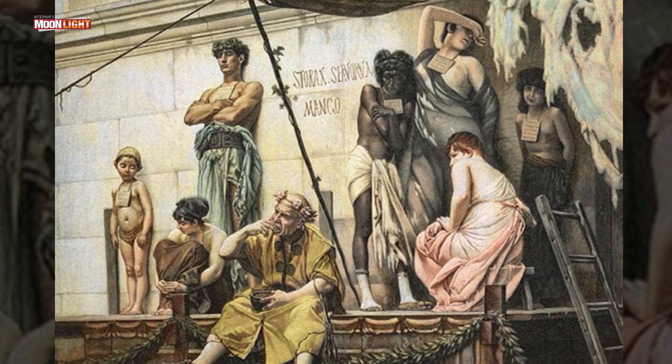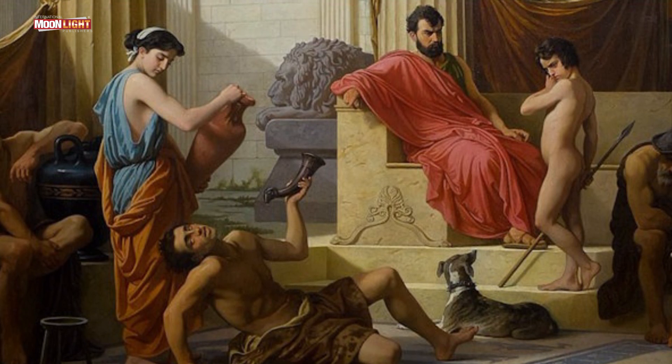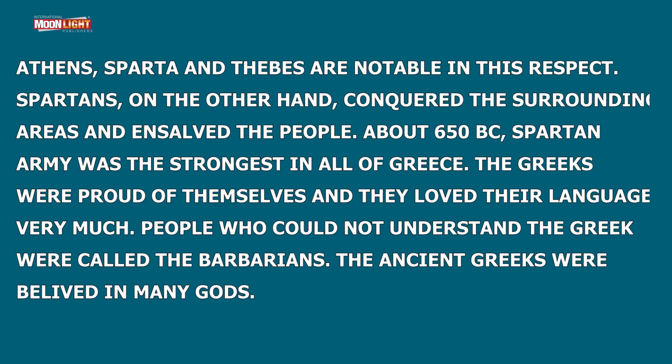There were many slaves in Greek society — about one third of the ancient Greeks were slaves. The Spartans treated their slaves very harshly, while the Athenians treated them somewhat better. Spartans conquered surrounding areas and enslaved the people. Around 650 BC the Spartan army was the strongest in all of Greece. The Greeks were proud of themselves and loved their language very much; people who could not understand Greek were called barbarians.